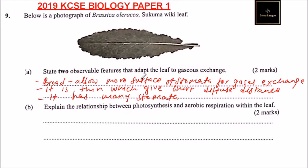If you state any two out of the three, you should be able to get two marks. Part B: explain the relationship between photosynthesis and aerobic respiration within the leaf. So, photosynthesis is how the plant makes its food, and aerobic respiration is a chemical process in which oxygen is used to make energy from carbohydrates or sugar.